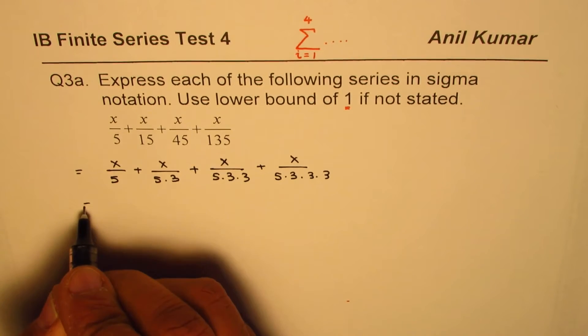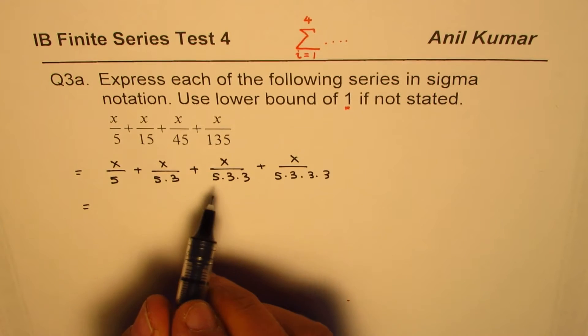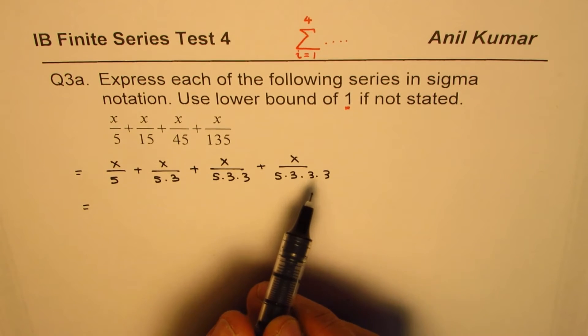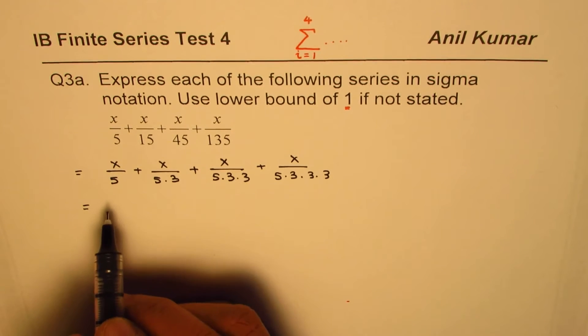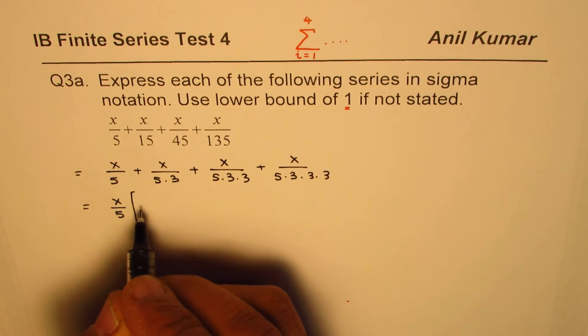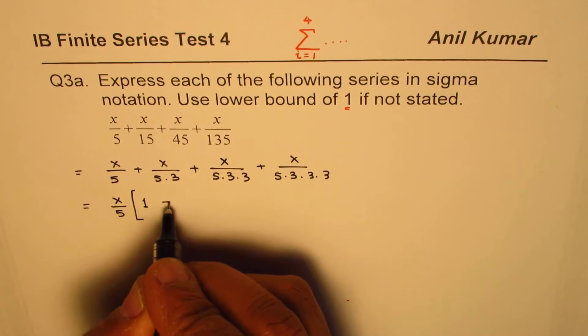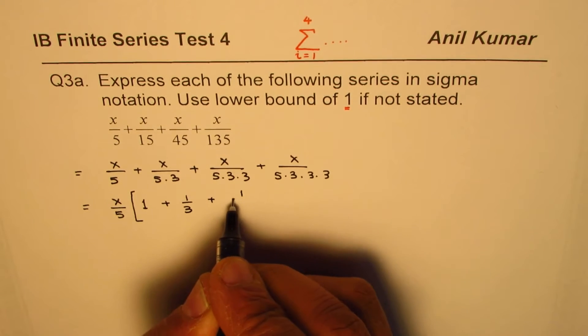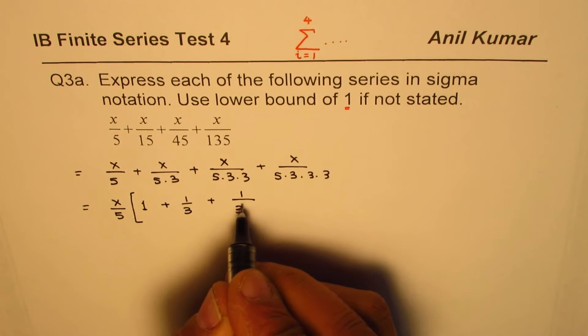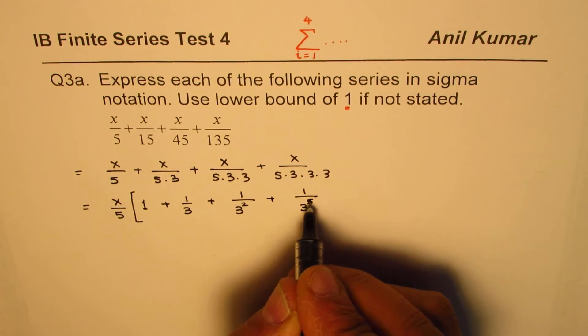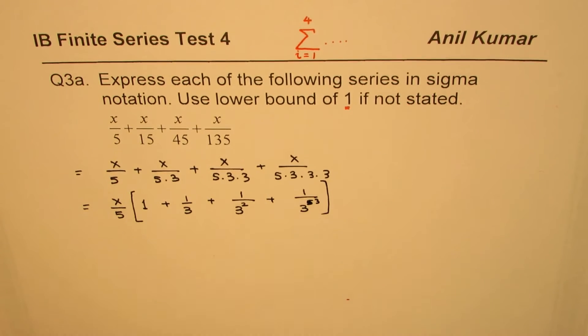In general, what we see is that the denominator is getting multiplied by 3 each time. And we do have a common factor here, which is X over 5. So if I take X over 5 outside, in that case, I get the first term as 1, the next term will be 1 over 3, and then we have 1 over 3 square, and then we could write this as 1 over 3 cube.